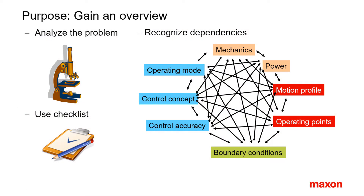Is all the necessary information available to perform a successful selection? Do we know all the relevant parameters? Dependencies between the single system components have to be identified. A checklist can be a helpful tool to make sure that all aspects have been considered.